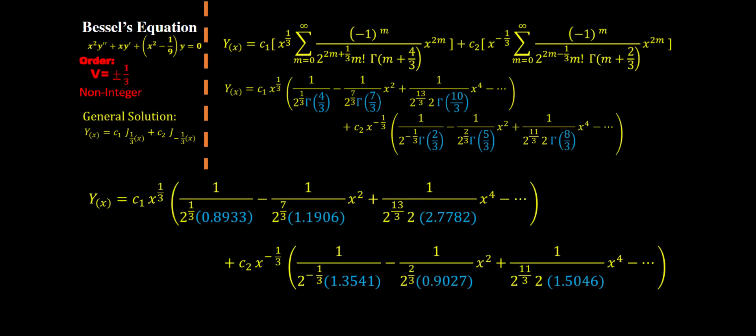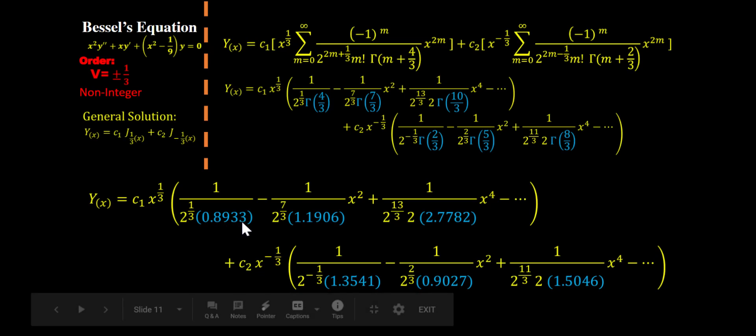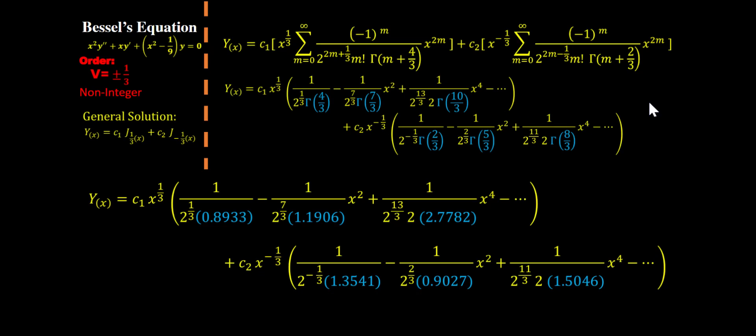And this is what we're gonna end up with. Every single gamma function right here, gamma function of four third has a value of 0.8933. There's a few more decimal places there but we don't care. This is good enough for us.